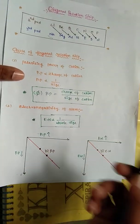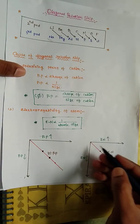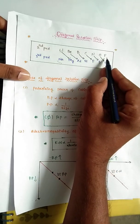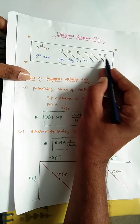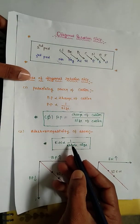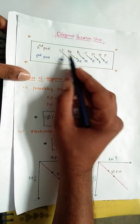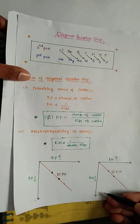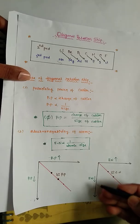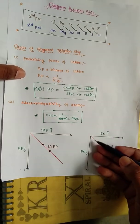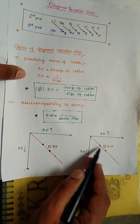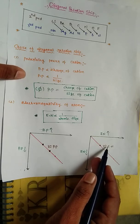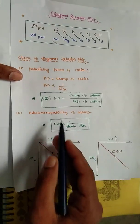The second important point is electronegativity of the atom. In periods, moving left to right, atomic size decreases, so electronegativity increases. In groups, moving top to bottom, atomic size increases, so electronegativity decreases. Therefore, the diagonally located elements have approximately the same electronegativity, which further explains why they share similar properties.